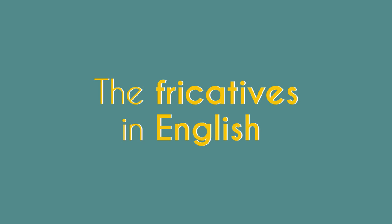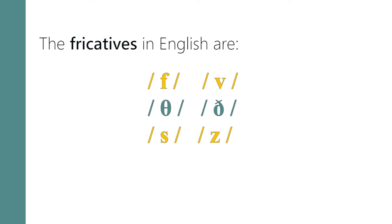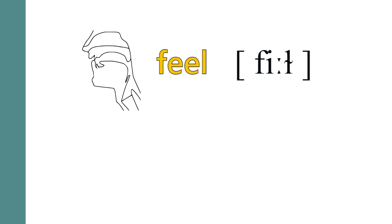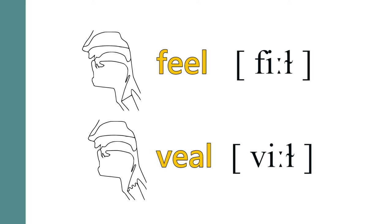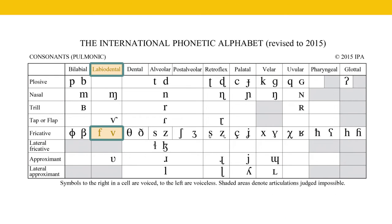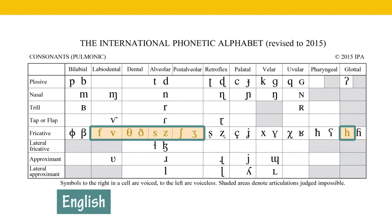In English we have the fricatives /f/, /v/, /θ/, /ð/, /s/, /z/, /ʃ/, /ʒ/, and /h/. The words 'feel' and 'veal' both have fricatives as their first sounds — /f/ and /v/ respectively. Interestingly, both sounds have the same place of articulation. The difference between the two is not in the manner of articulation, because they are both fricatives — the difference is in voicing. In fact, all the fricatives in English come in pairs of voiceless and voiced, except for /h/, which does not have a voiced version in English.